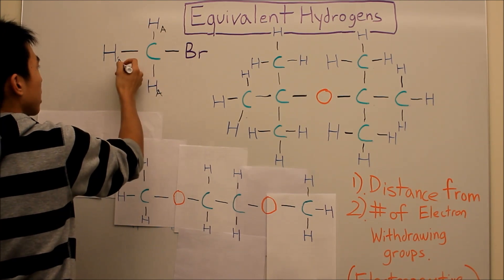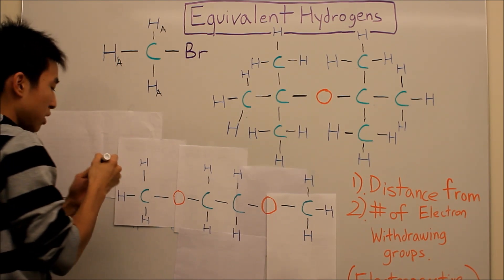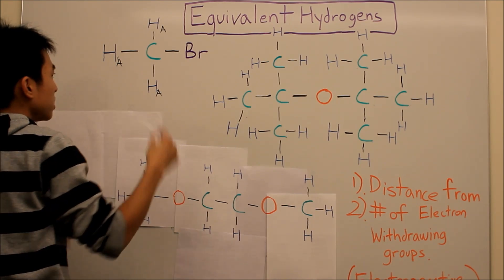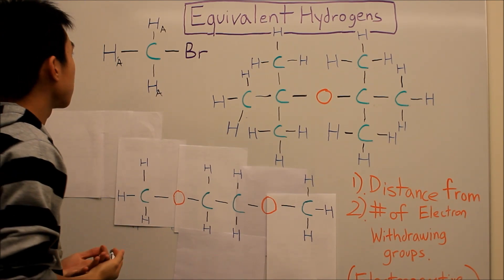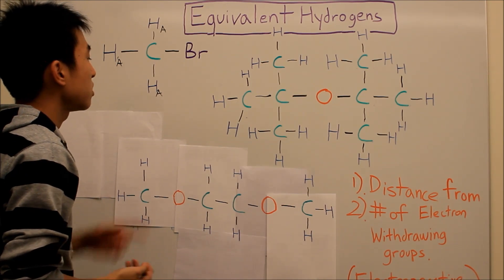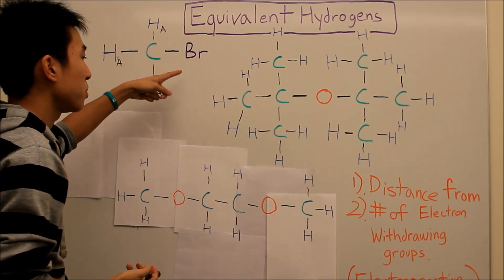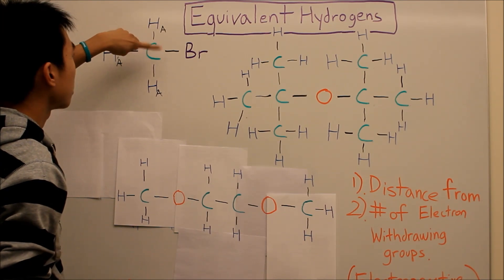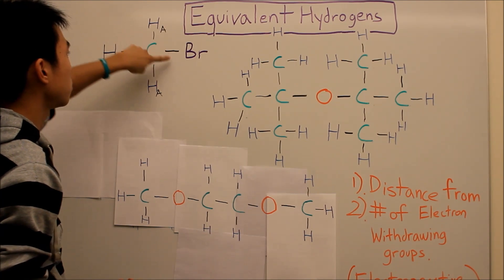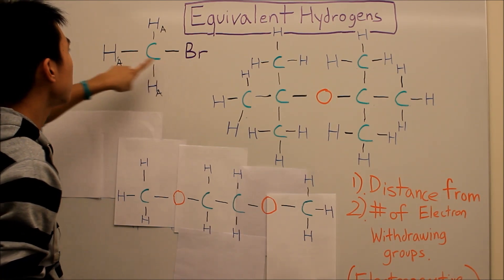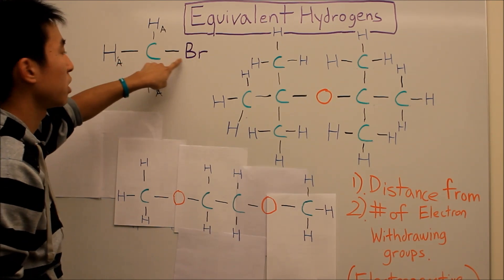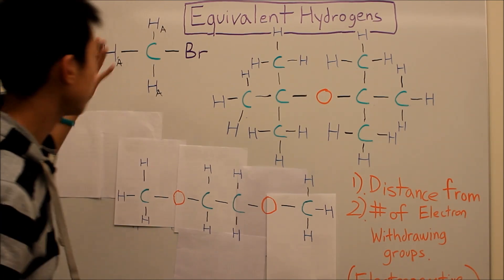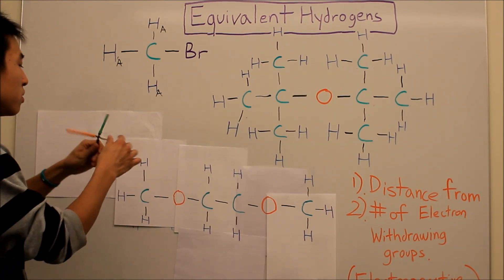They would all be labeled HA. The reasoning behind that is because the distance they are from the bromine is the same — they're all two bonds away. One bond, two bonds, bromine. One bond, two bonds, bromine. One bond, two bonds, bromine.